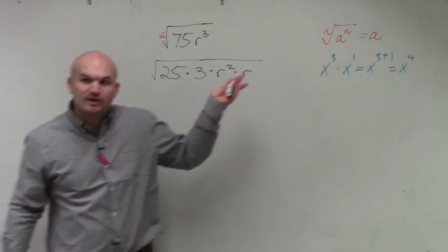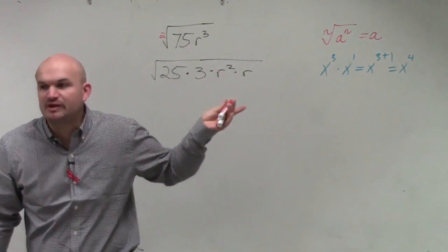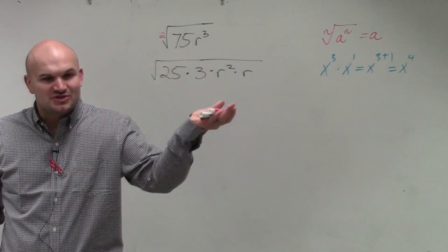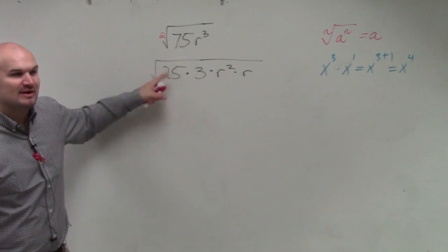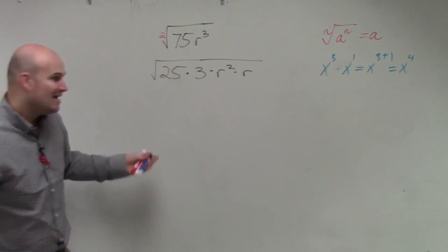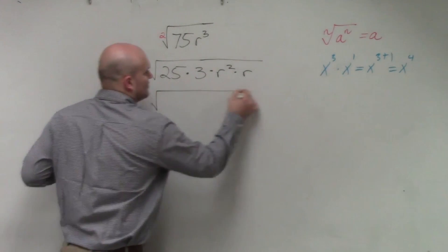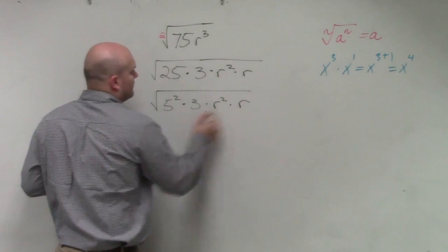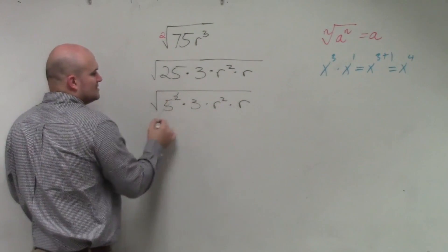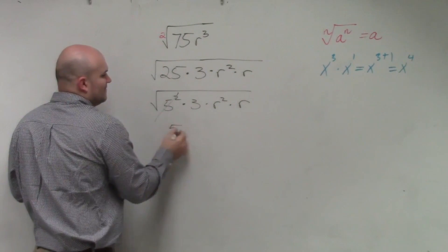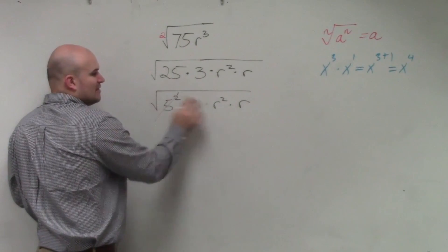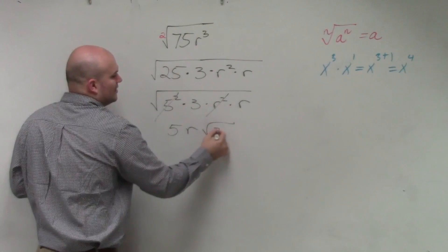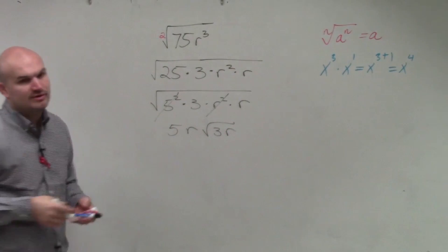The reason why I want to pick a square number is because all square numbers can be rewritten as a number squared. So 25 can be rewritten as 5 squared. Now the square root of 5 squared is 5. I can't take the square root of 3. The square root of r squared is r. So I'm left with 5r times the square root of 3r.